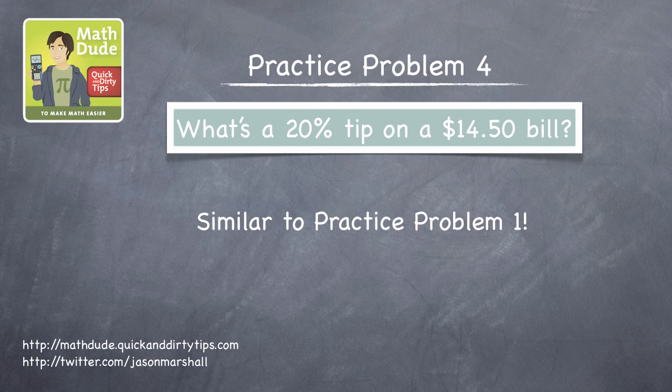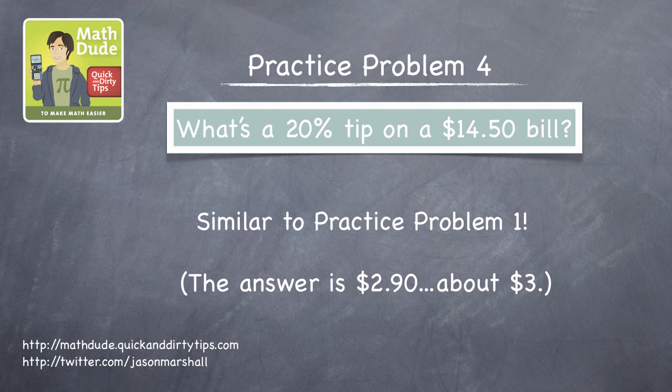The fourth problem asks for a 20% tip on a $14.50 bill. This is very similar to the first problem, so I'll let you work it out. The answer is $2.90, about $3.